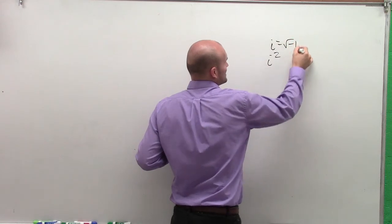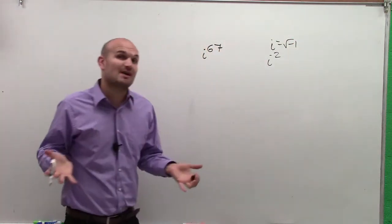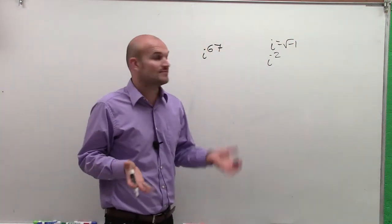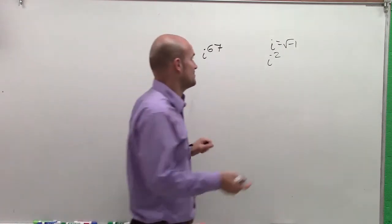We learned that i represents square root of negative 1, because we don't have a number in the real number system for that. So we give it i, which denotes imaginary.